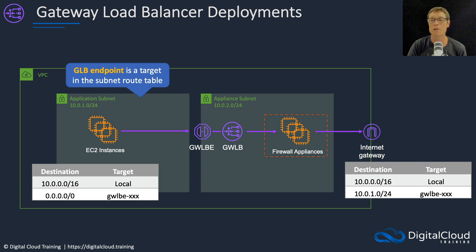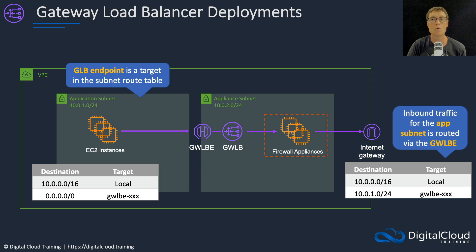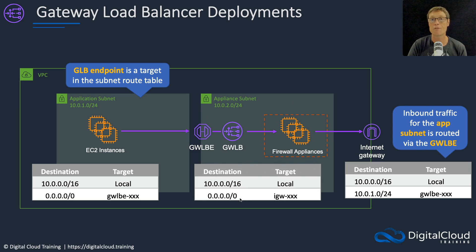The return traffic is going to come back from the internet. What we want to do is use a gateway route table that's attached to our internet gateway, so that we can direct the return traffic via the gateway load balancer endpoint. In this case, we're saying that anything with a destination of 10.0.1.0/24 — which is the app subnet — should go via the gateway load balancer endpoint. It's going to hit there, get load balanced through the firewall appliances. And from that subnet, there's no gateway load balancer endpoint, because all we want to do now is route internally using the local route to the EC2 instances. So now we've got the firewalls acting on traffic going out and coming back in.